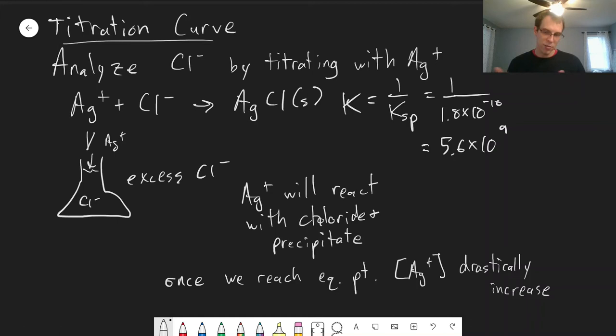In an actual titration, we don't go past the equivalence point. Of course, we try and end right at the end point. But we're going to look at what happens to this titration curve as we proceed.